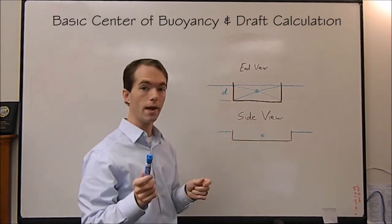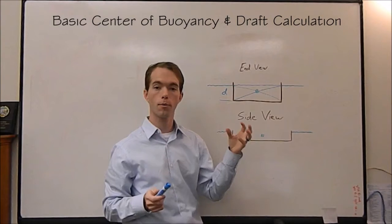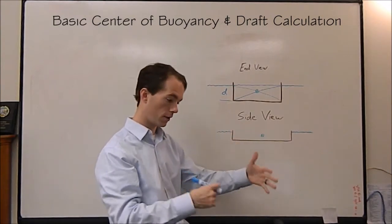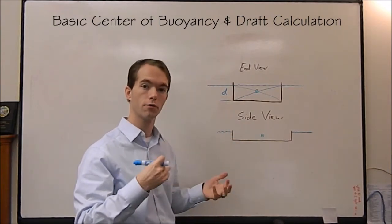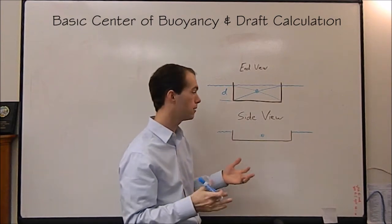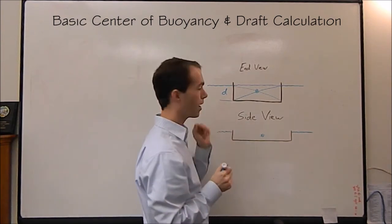Draft is the distance from the bottom of the keel to the waterline. Draft varies with the weight. The dimensions of your boat at this point are fixed. You know what the area is, you know what the height is, so you know what its maximum displacement should be. But draft is going to vary.